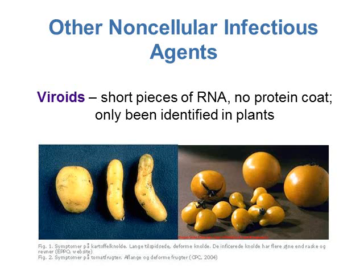Finally, viroids are short pieces of RNA with no protein coat, and all identified viroids have only been found in plants. They cause the fruit of plants to look abnormal — for example, potatoes produced by a viroid-infected plant look very different from normal potatoes, and weird-shaped tomatoes are another example shown here.